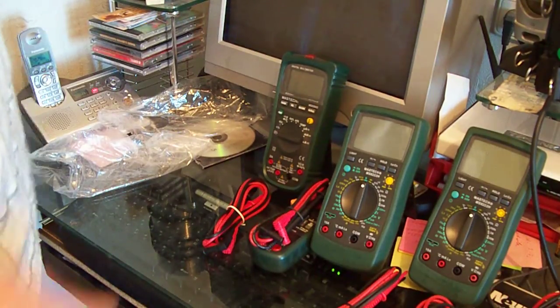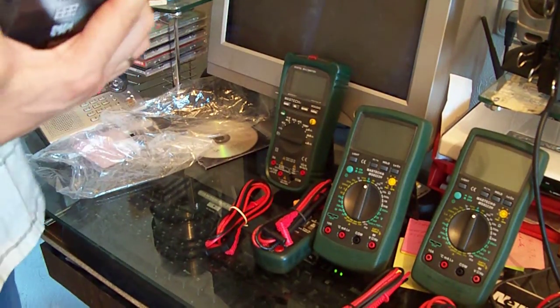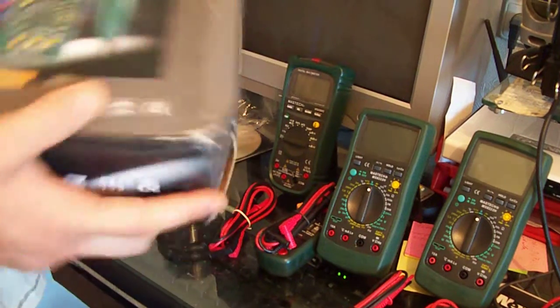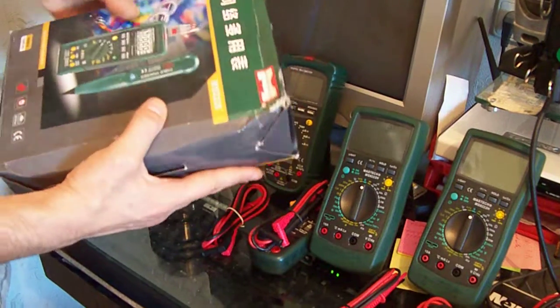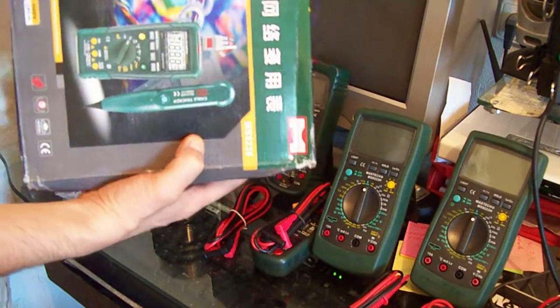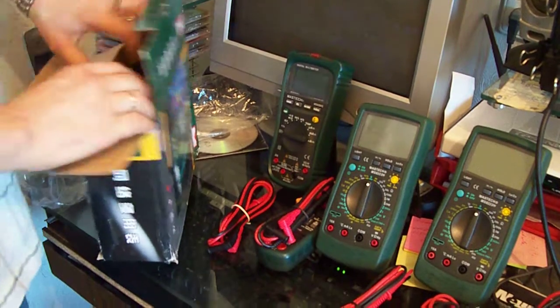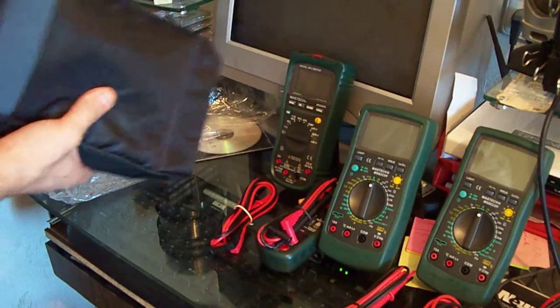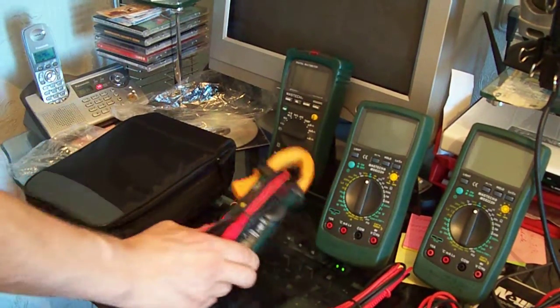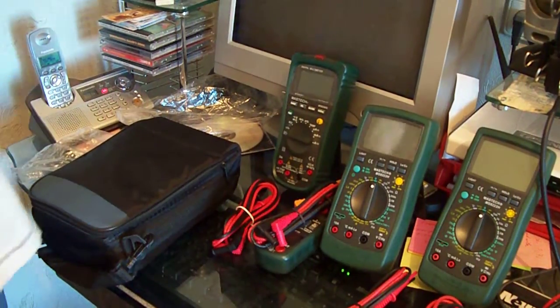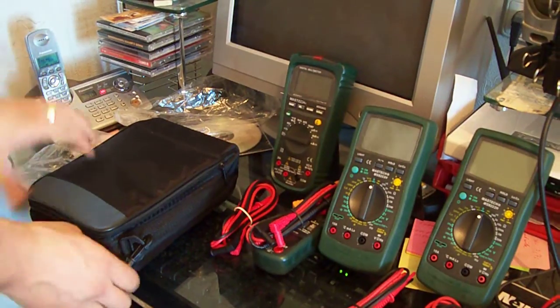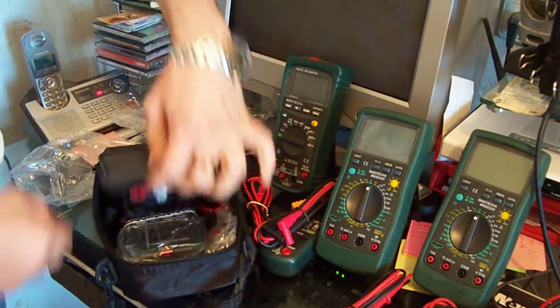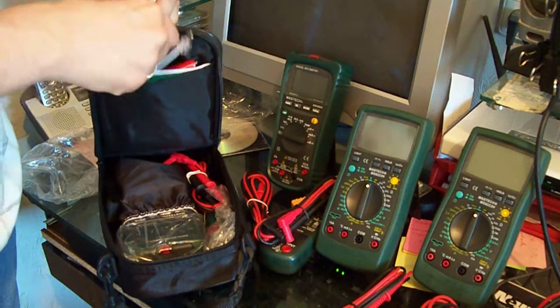And the last one, but not the worst one. It's a Mastage 8236 cable tester and cable finder. Comes also in a bag as the 2000 model. Sorry for the sound. Let's see it.